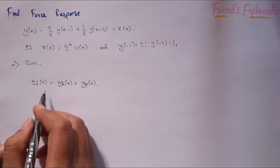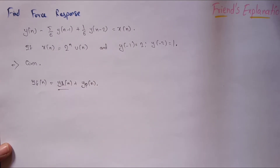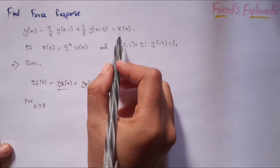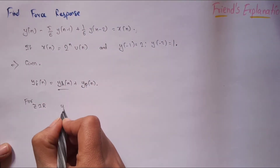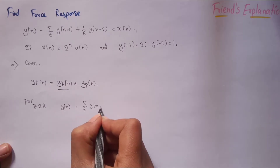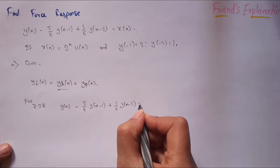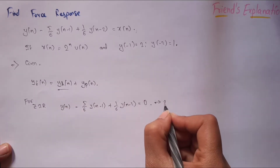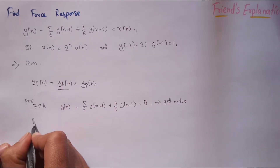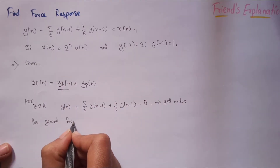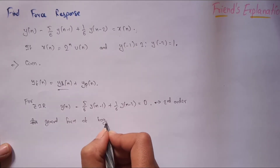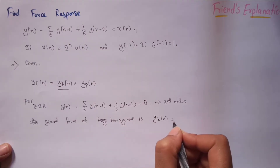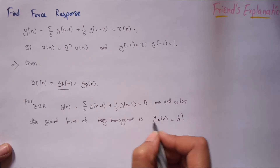To find the homogeneous equation, we follow the same steps used for finding the natural response. For the zero input response, we set the input to zero and take the output equation equal to zero. We then solve this homogeneous equation — this is a second order homogeneous equation — and for the general form, y_h of n equals lambda to the power n.